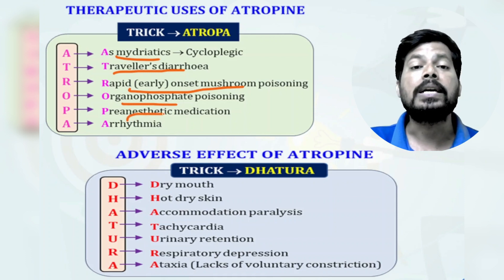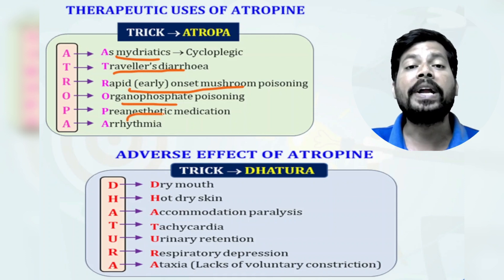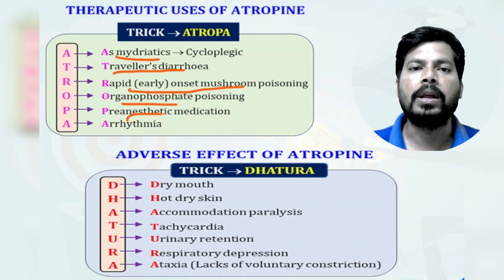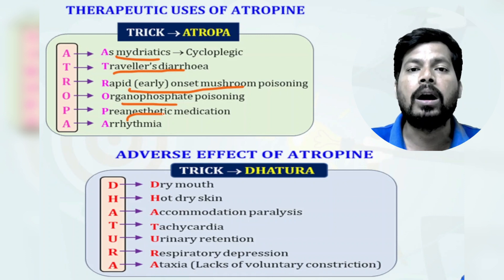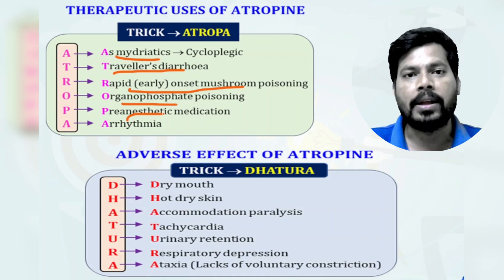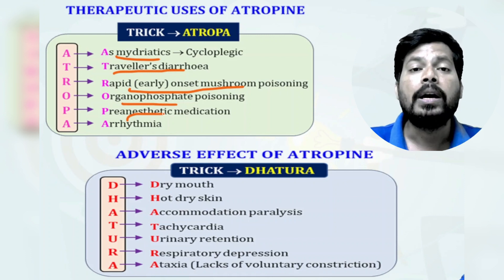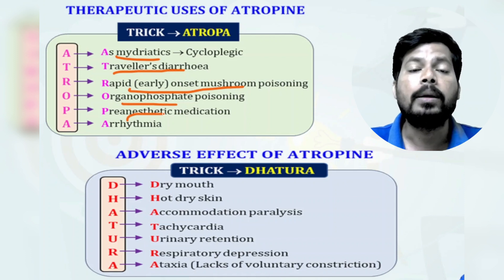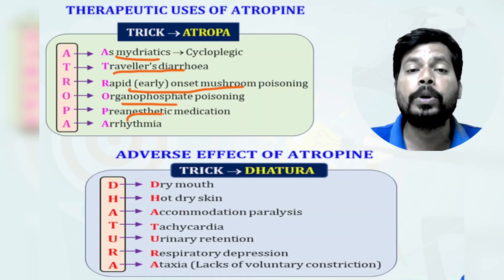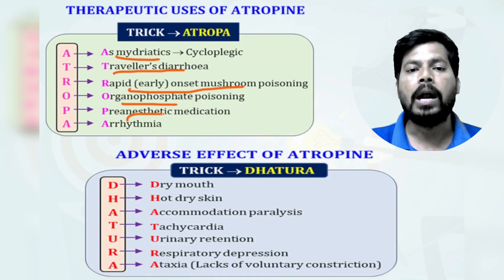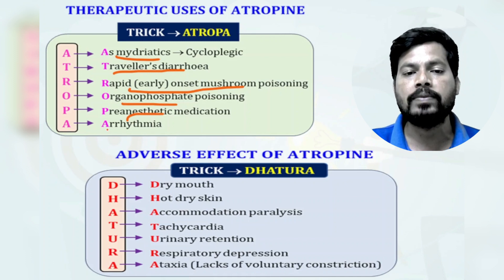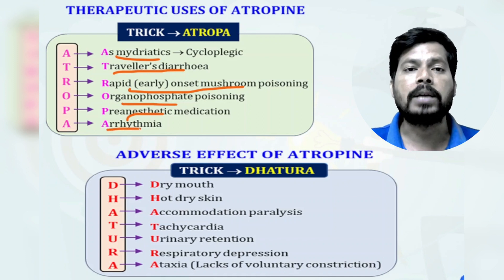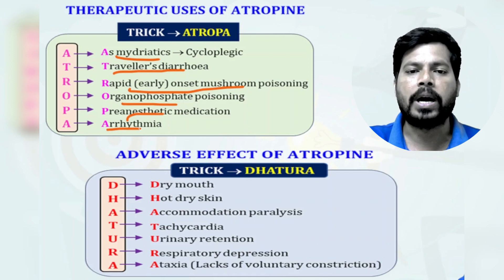Atropine is used as a pre-anesthetic medication in surgical procedures to maintain heart rate normally. During surgical procedures and general anesthesia, there is a chance of bradycardia. Atropine is used to maintain the heart by increasing heart rate, because acetylcholine causes bradycardia but atropine causes tachycardia. Atropine is also used in bradyarrhythmias to convert towards tachyarrhythmias.